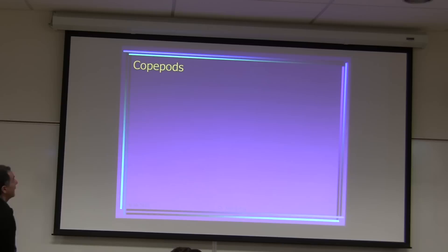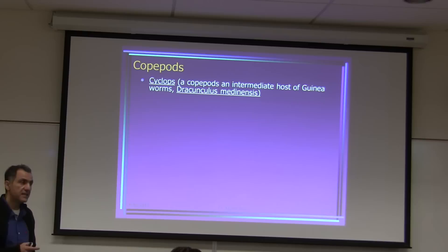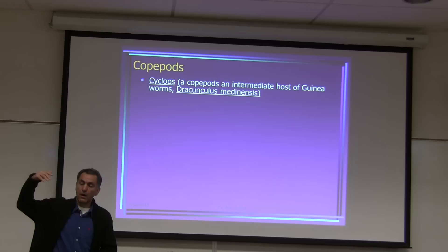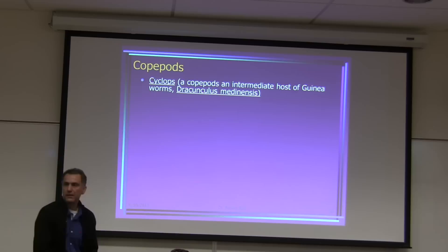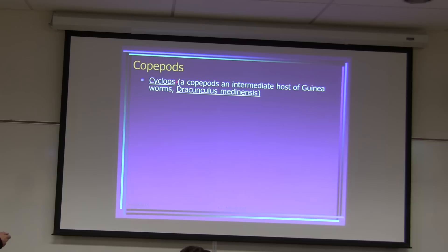Copepods — you are familiar with this group. The genus Cyclops is one you studied before. The L1 larvae of Dracunculus medinensis (guinea worm) go into this copepod, and then we drink the copepod from contaminated water, and then we get a guinea worm. The genus we drink from contaminated water is Cyclops, which belongs to copepods.